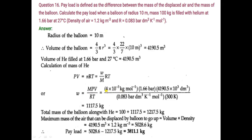We have to convert grams to kilograms, so multiply by 10⁻³. Pressure is 1.66 bar. Value of V is 4190.5 m³. We have to convert m³ into dm³ because the gas constant is given with volume in dm³. Temperature will be in Kelvin. Solving this, the mass of helium gas comes out to be 1117.5 kg.